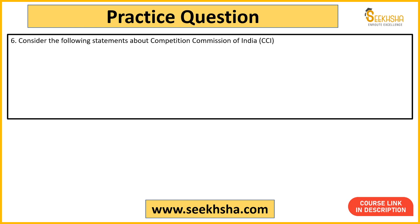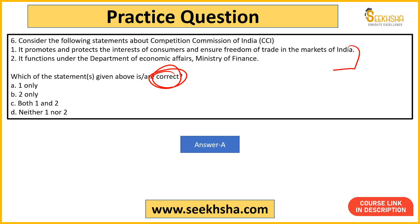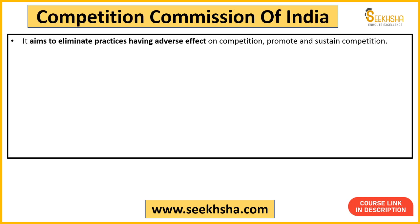Next question is about the Competition Commission of India, which is an important body that appears frequently in the news. Statement one says it protects and promotes consumer interests and ensures freedom of trade in the Indian market, meaning it prevents monopoly creation. Statement two says it works under the Department of Economic Affairs, Ministry of Finance. You need to identify which statement is correct. The answer is option A — only statement one is correct.